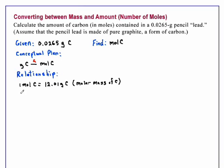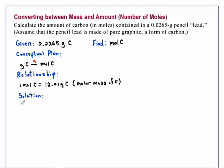So we are ready to solve. Starting with our number of grams of carbon, which is 0.0265 grams of carbon, we will use our single relationship, which is the molar mass of carbon, to convert this to moles.